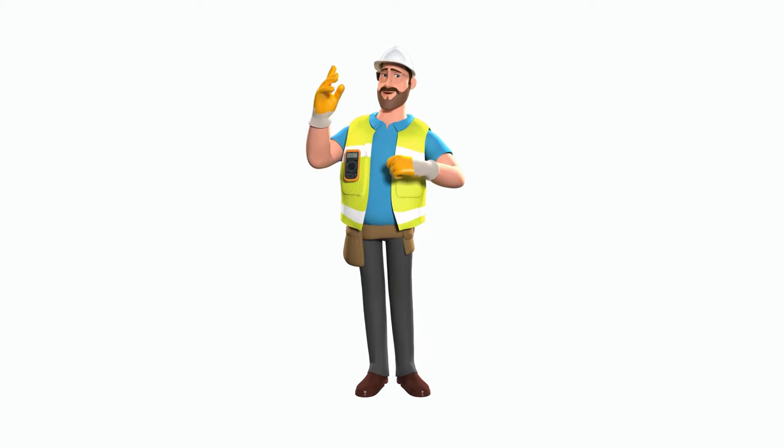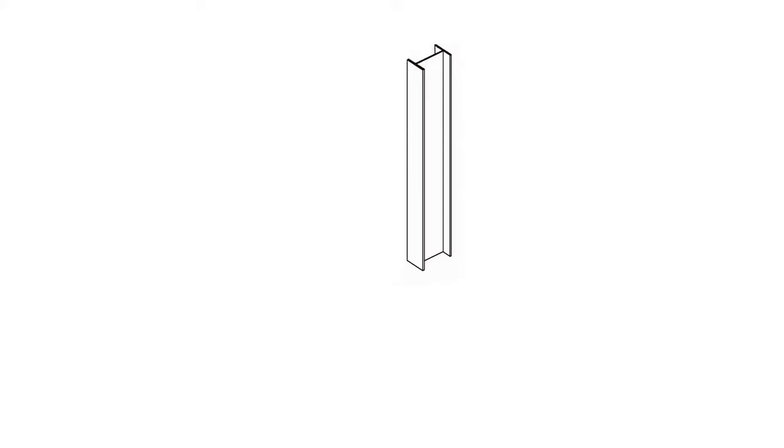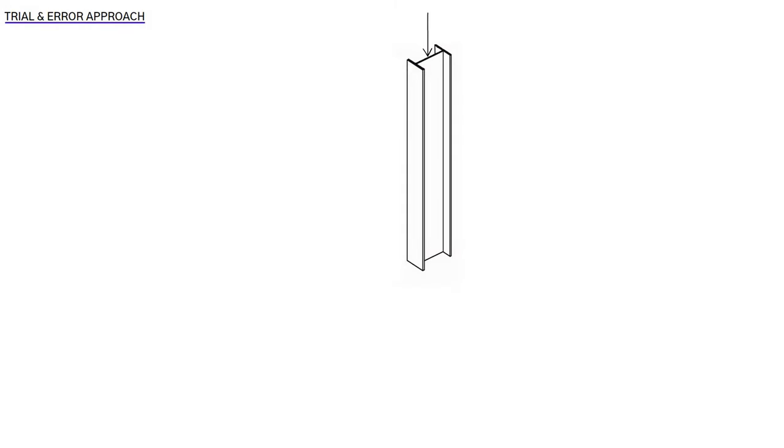Welcome back to the channel. In this video, we will cover the design procedure of a steel column for compression that involves a trial and error approach. To do that, we need to understand the following steps.